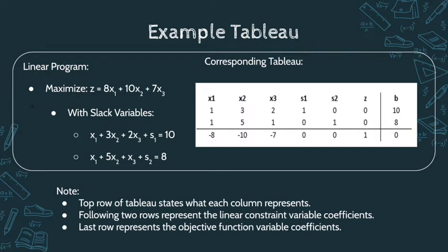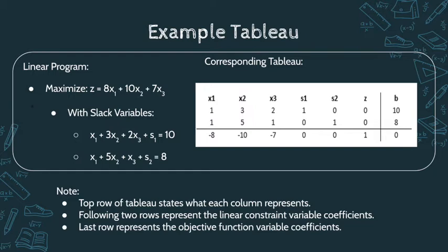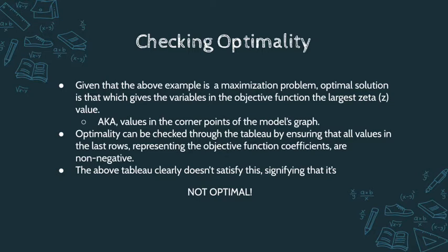Now that we have the tableau with all information organized, we need to check for optimality. Given that this is a maximization problem, the optimal solution gives the objective function the largest zeta value — graphically, the corner points that increase the shape to its maximal level. Optimality is checked by ensuring all values in the last row are non-negative. As you can see in this tableau, we have three negative values, which means it is not yet optimal, and this is where the pivot variables come into play.